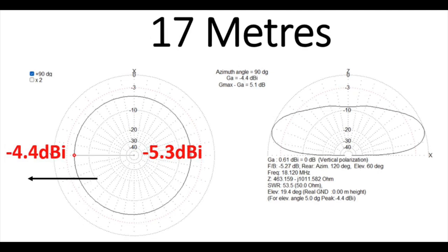On 17 metres, again, we've got a slight bias in that direction of the slope. It's a bit less of a bias compared to 20 and 40, but the dBi there is under, and again, pretty nice figures as well. Now on 17 metres, this antenna is just over a half wavelength long.